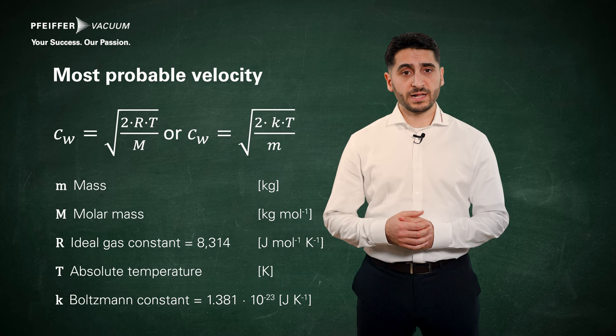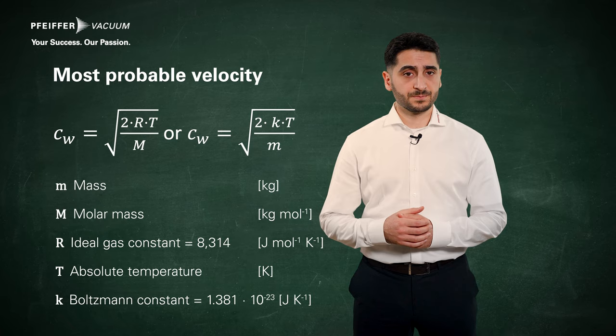The formula for the most probable velocity is Cw equals the root of 2 multiplied by the ideal gas constant and the temperature divided by the molar mass.